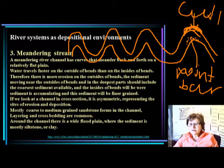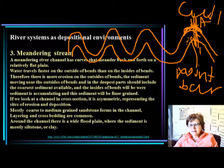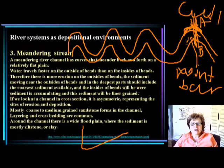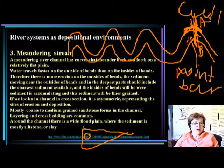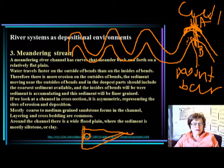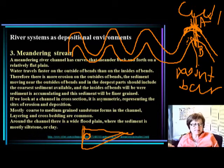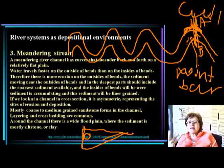Looking at the cross-section of this channel — I'll put the cross-section right here, with side A and side B — the A side is the cut bank. The cut bank side is much steeper, and this is where the water moves faster, causing erosion. The B side is where the water moves slower, so deposition occurs. In the channel you have mostly coarse to medium sandstone.